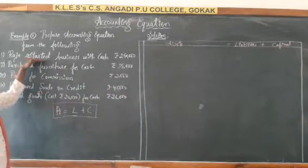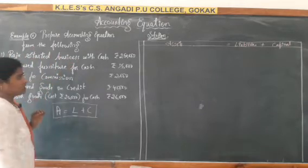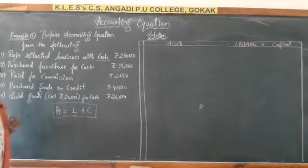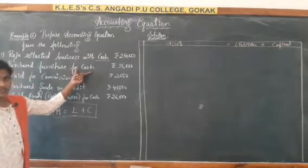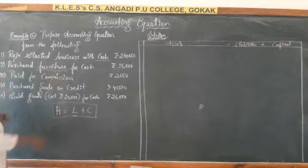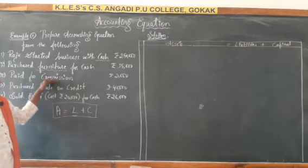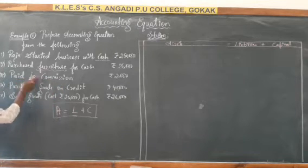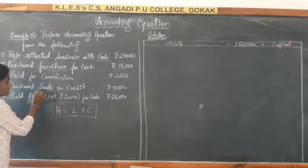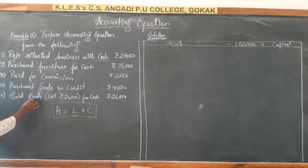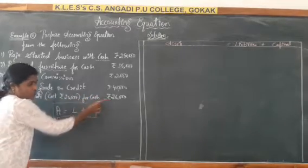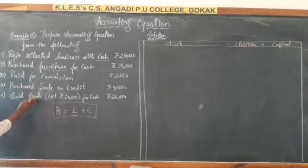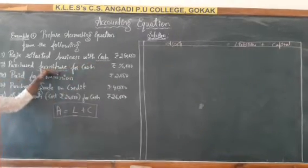The first transaction involves cash, which is an asset. The second transaction — purchased furniture for cash — furniture is an asset. For the paid commission transaction, commission is paid from cash only. Next, purchase goods on credit — goods is an asset. Sold goods of cost ₹20,000 for cash ₹26,000 — this should be shown in both cash and goods. So there are mainly three asset heads: cash, furniture, and goods.